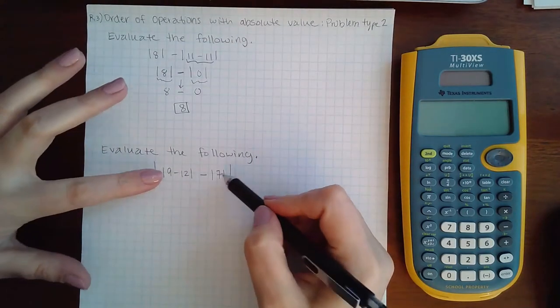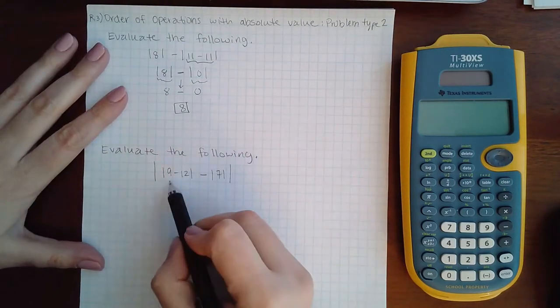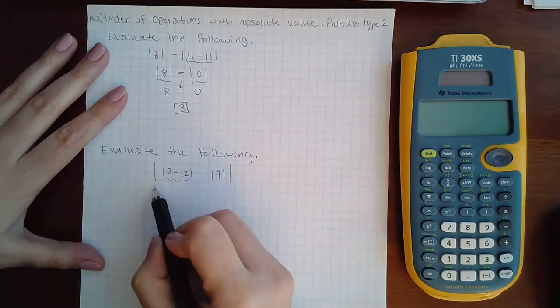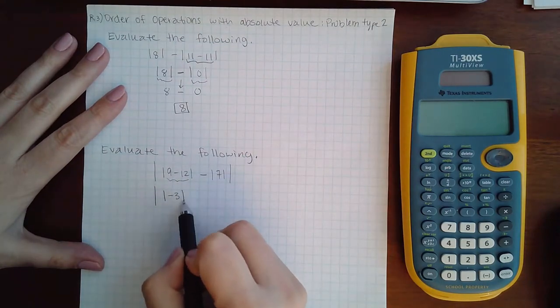Here I have bars within bars. So I do have something to do inside of these bars. 9 minus 12 is negative 3.